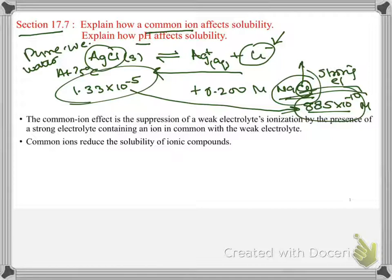So, this is known as the common ion effect, because you are adding a common ion. And that basically what it does, it suppresses the ionization of a weak electrolyte. In this case, we took the example of silver chloride. And how? By the presence of a strong electrolyte, which is NaCl, containing an ion, chloride ion, in common with the weak electrolyte.